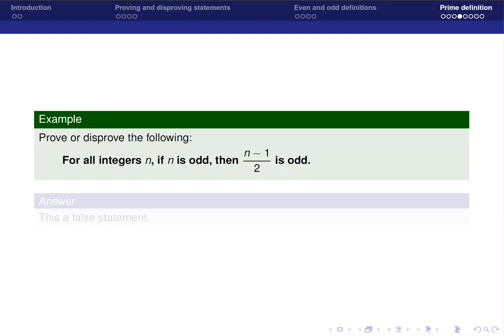For all integers n, if n is odd, then n minus 1 divided by 2 is also odd. So this is an example of a universal statement that has a conditional following it. A conditional is an if-then statement.